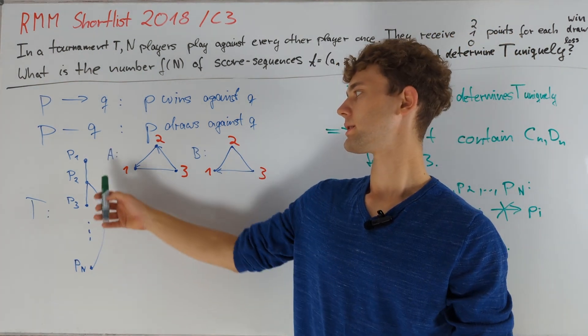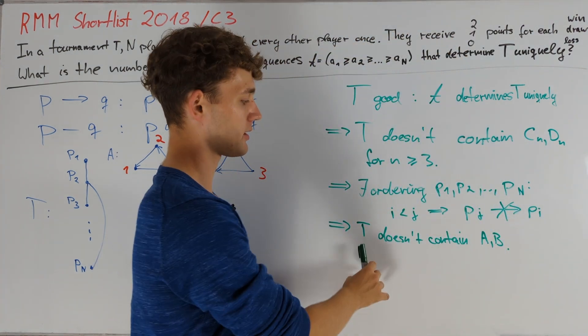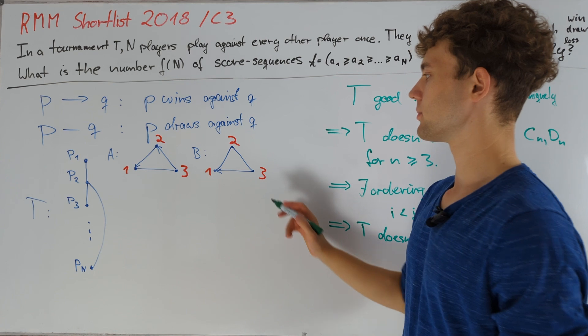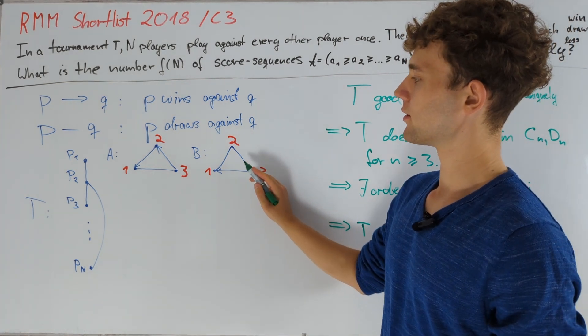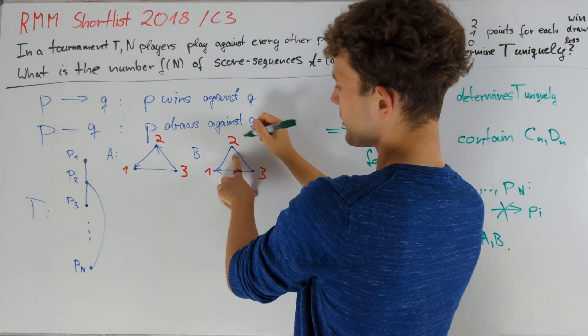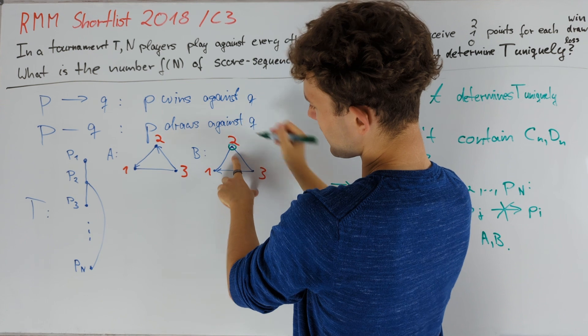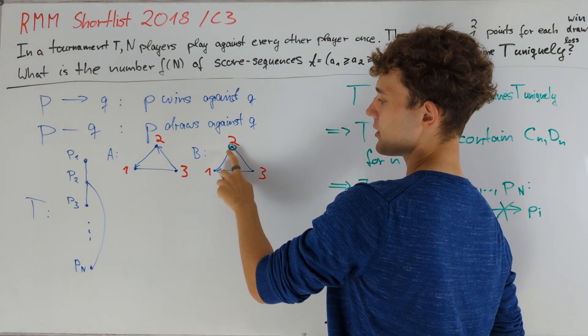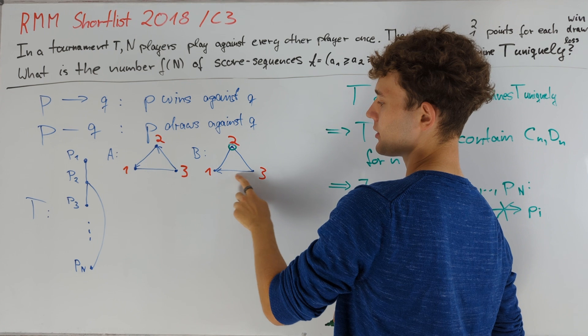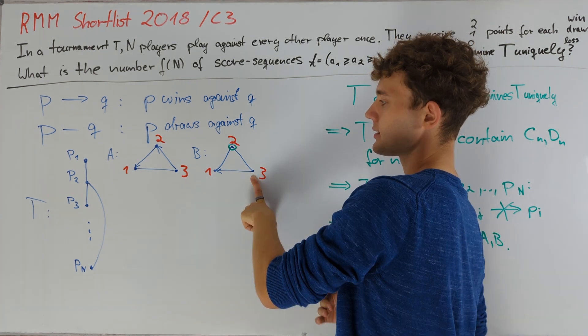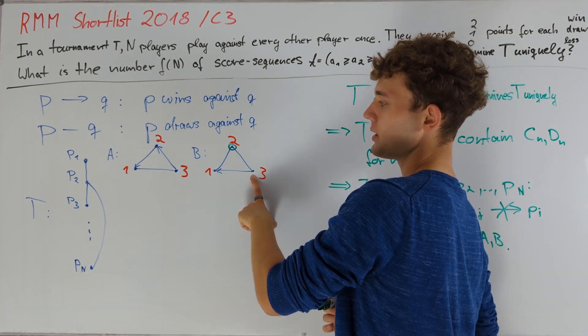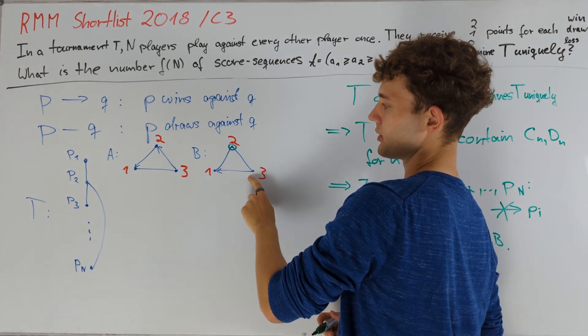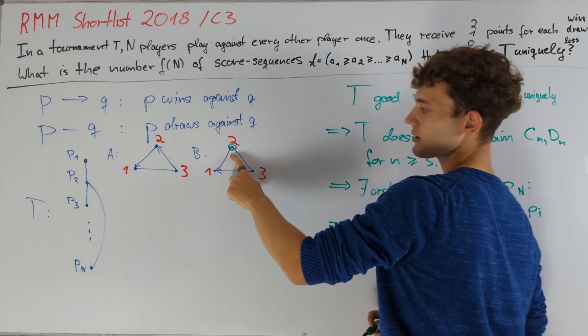We call those tournaments A and B, and I just noted down that T doesn't contain A or B. Now looking at the structure of these tournaments, we particularly notice that in B we have this vertex having two draws. If a player draws at least twice, we can look at the outcome of a match between two such opponents. Since T doesn't contain a C3 or B, all possible outcomes here are impossible, and therefore T doesn't contain a vertex that draws at least twice.